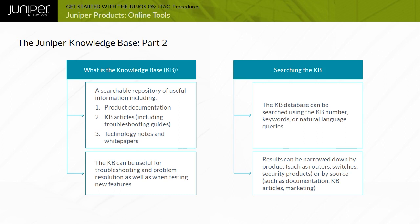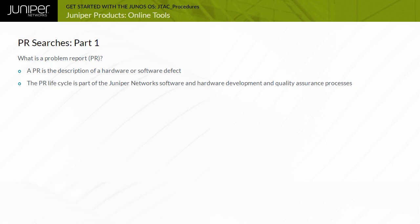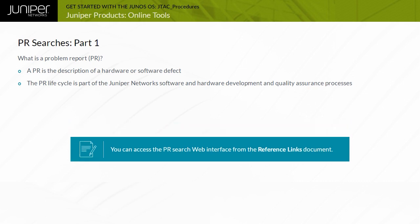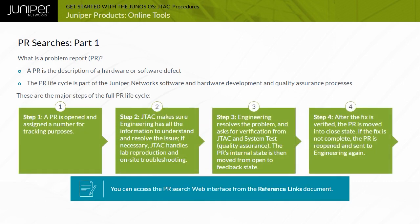Each KB article has an ID number that can be used to refer to it. A problem report, or PR, is the description of an issue, typically a software issue, that must be addressed by the Juniper engineering team. The life cycle of a PR is part of the Juniper software and hardware development and quality assurance processes. Note that you can access the PR search web interface from the Reference Links document. The steps displayed are the major steps of the full PR life cycle.